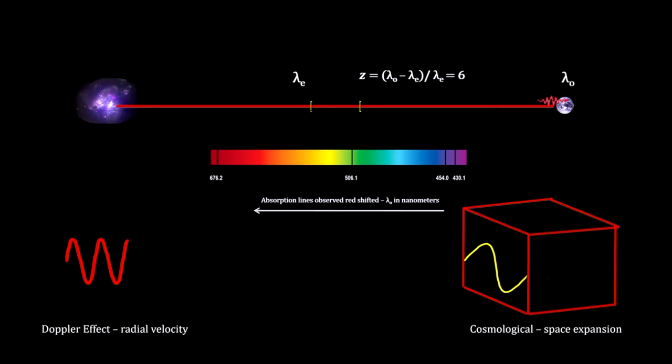In this hypothetical example, we have an object with a redshift equal to 6.